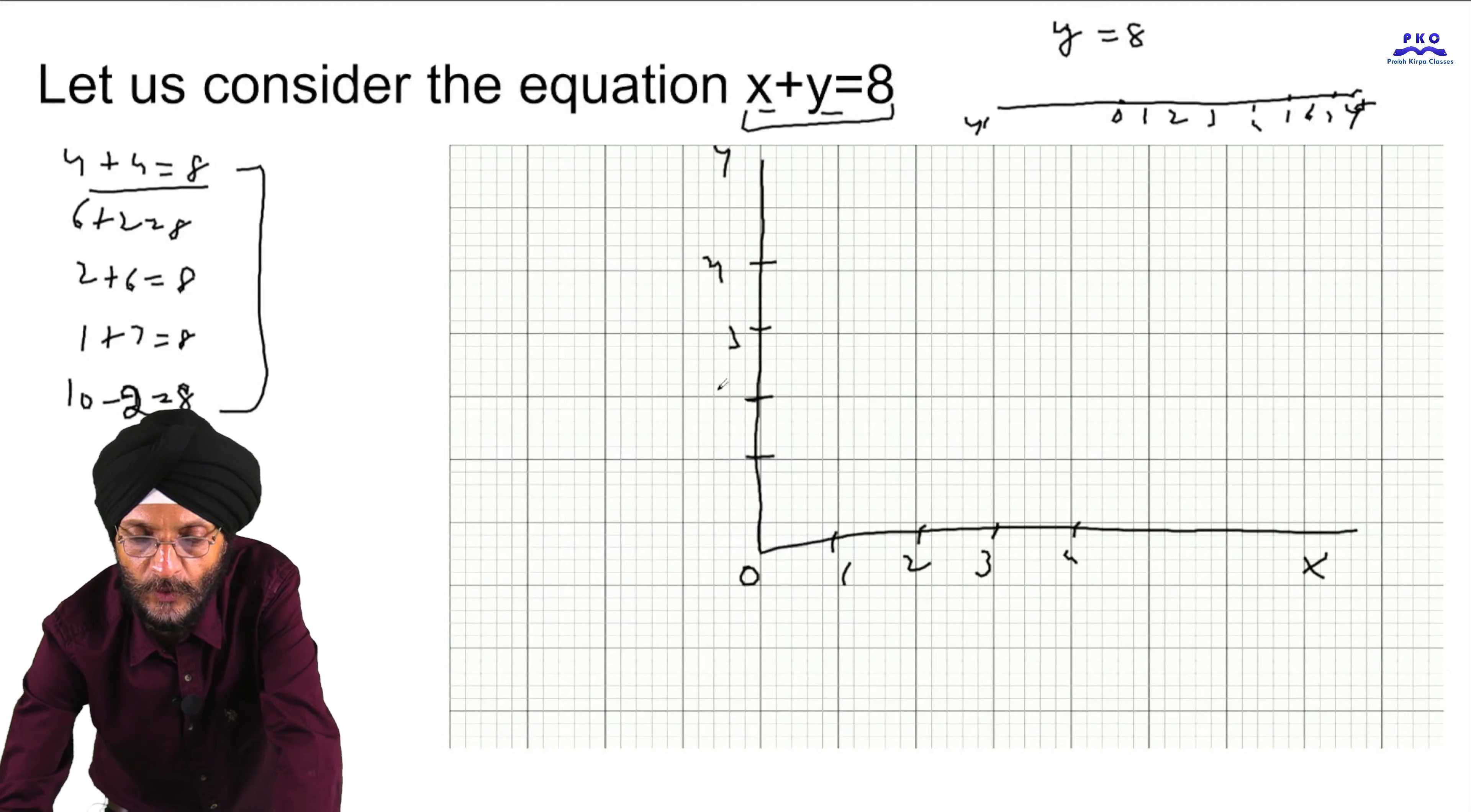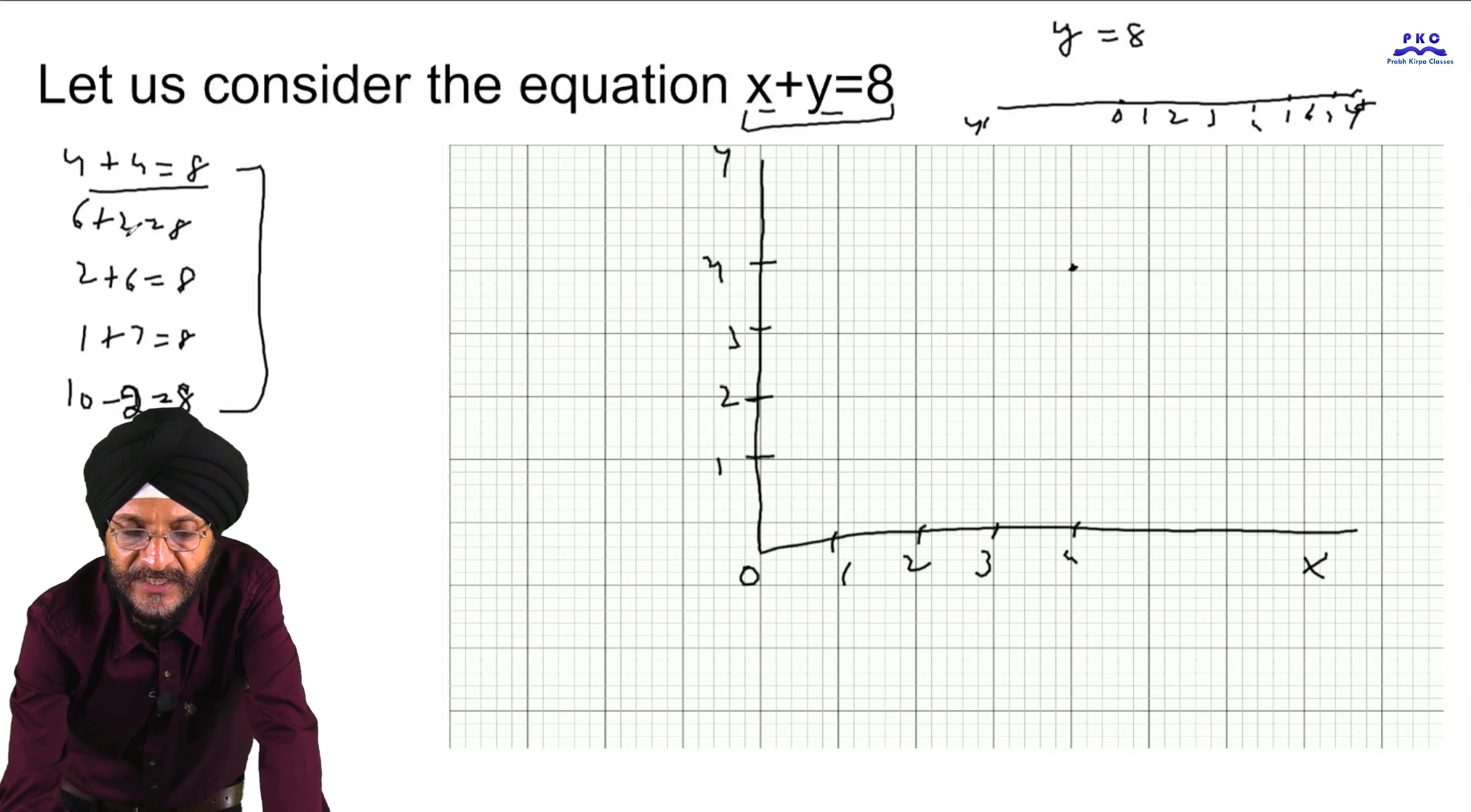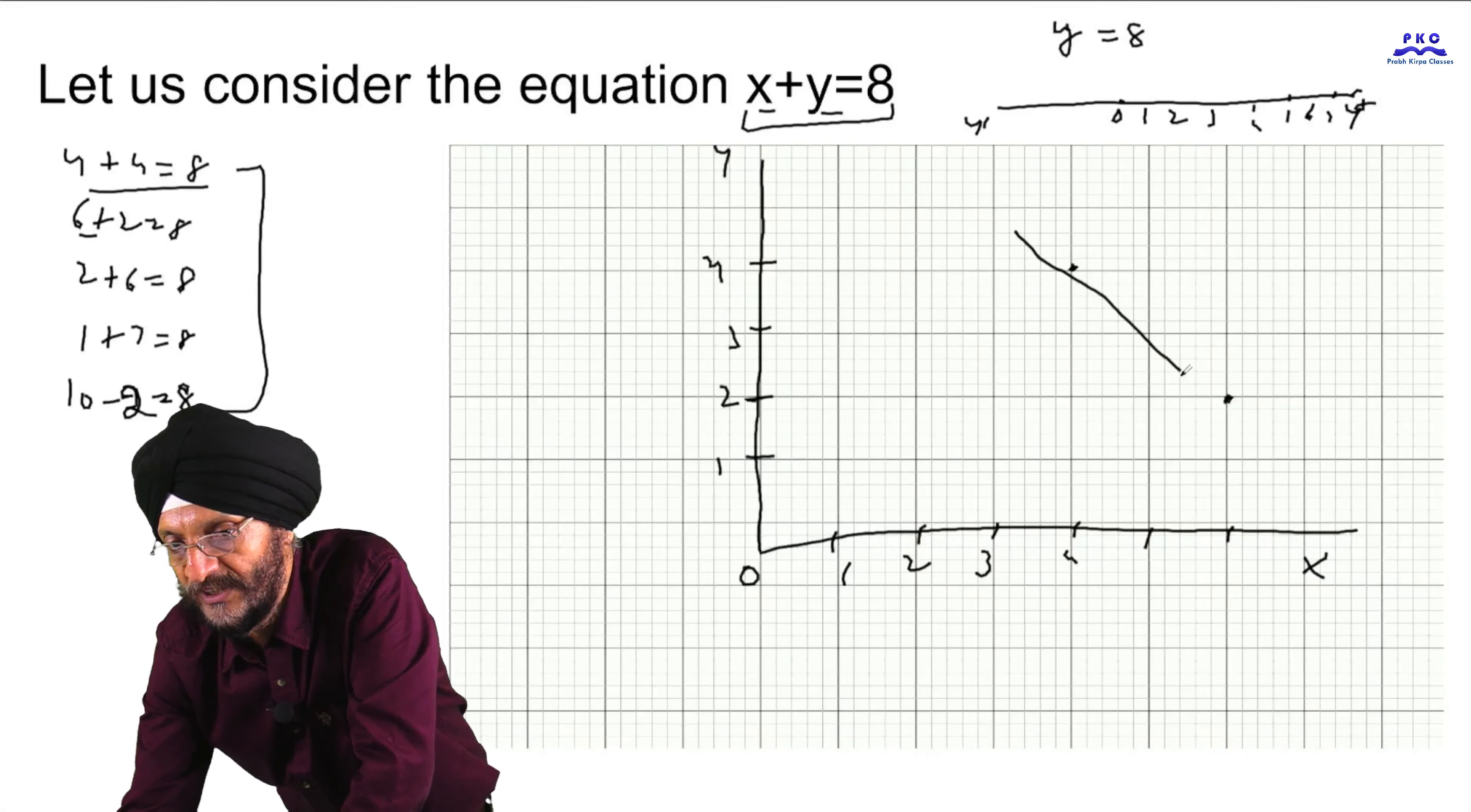When you will solve the questions in this course further, you will have a clear view of the same. Here it is 4 plus 4, the first point will be here. You can take any other, 6 plus 2, that is the value of X is 6, so here it is 6, the another value of Y is 2, that is the another point is 2. Here you can join both these two points.